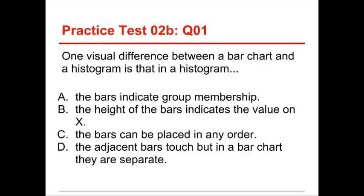One visual difference between a bar chart and a histogram is that in a histogram, the choices are: the bars indicate group membership, the height of the bars indicates the value on x, the bars can be placed in any order, and the adjacent bars touch but in a bar chart they are separate. The answer to this one is D, the adjacent bars touch, but in a bar chart they are separate.